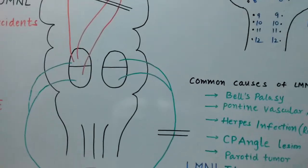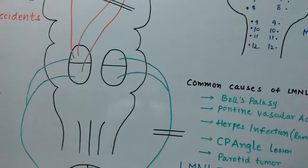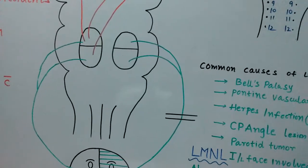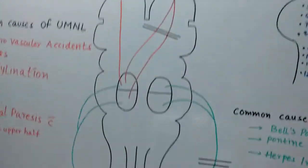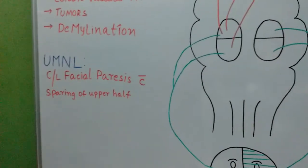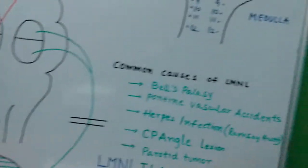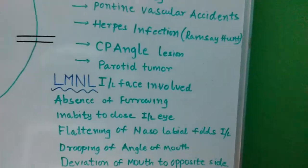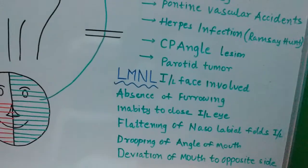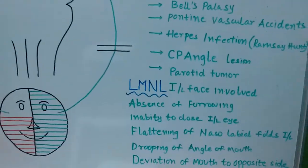The topic of the facial nerve, its course and branches, will be covered in the next video. The key takeaway from today's video: in upper motor neuron lesions, there is contralateral facial paresis with sparing of the upper half; in lower motor neuron lesions, the ipsilateral face is involved with involvement of both upper and lower halves. Please like, share, and subscribe. Thank you.